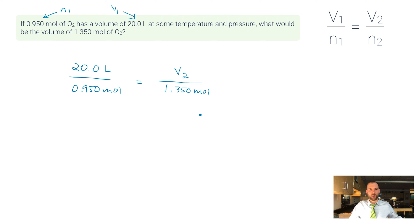At this point, I want to cross multiply: 20 times 1.35, then divide by 0.95. That gives me a new volume. If you think about this logically, my amount of moles has increased, so my new volume should therefore increase.